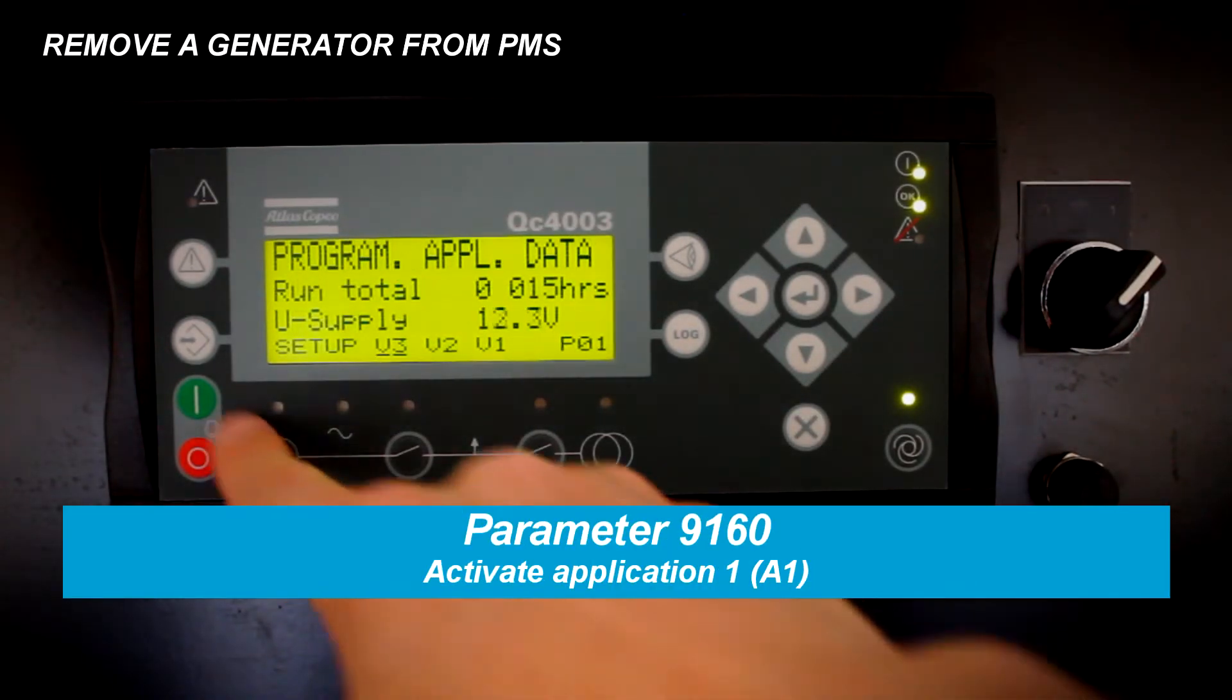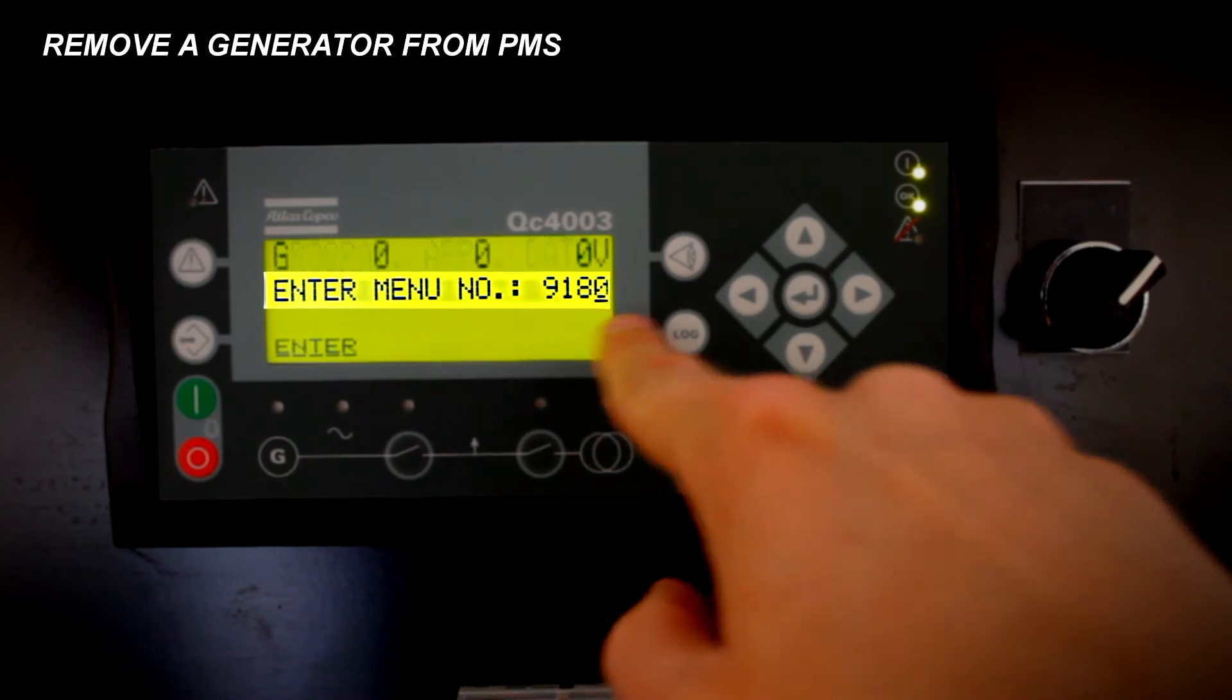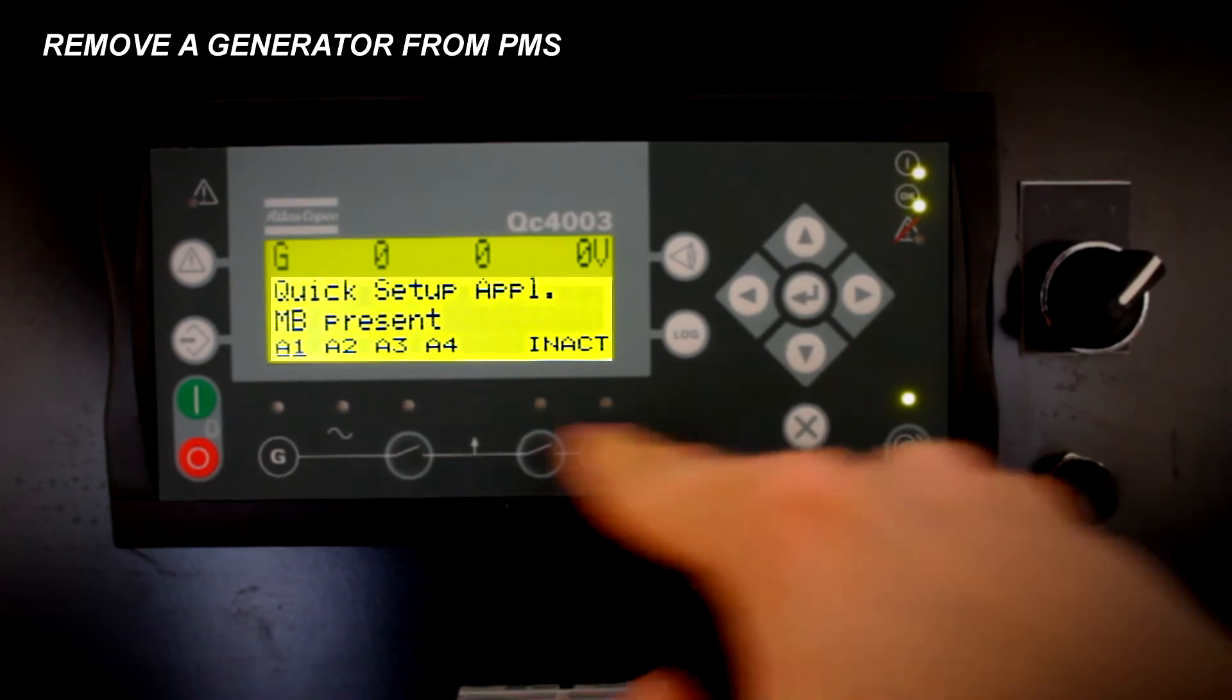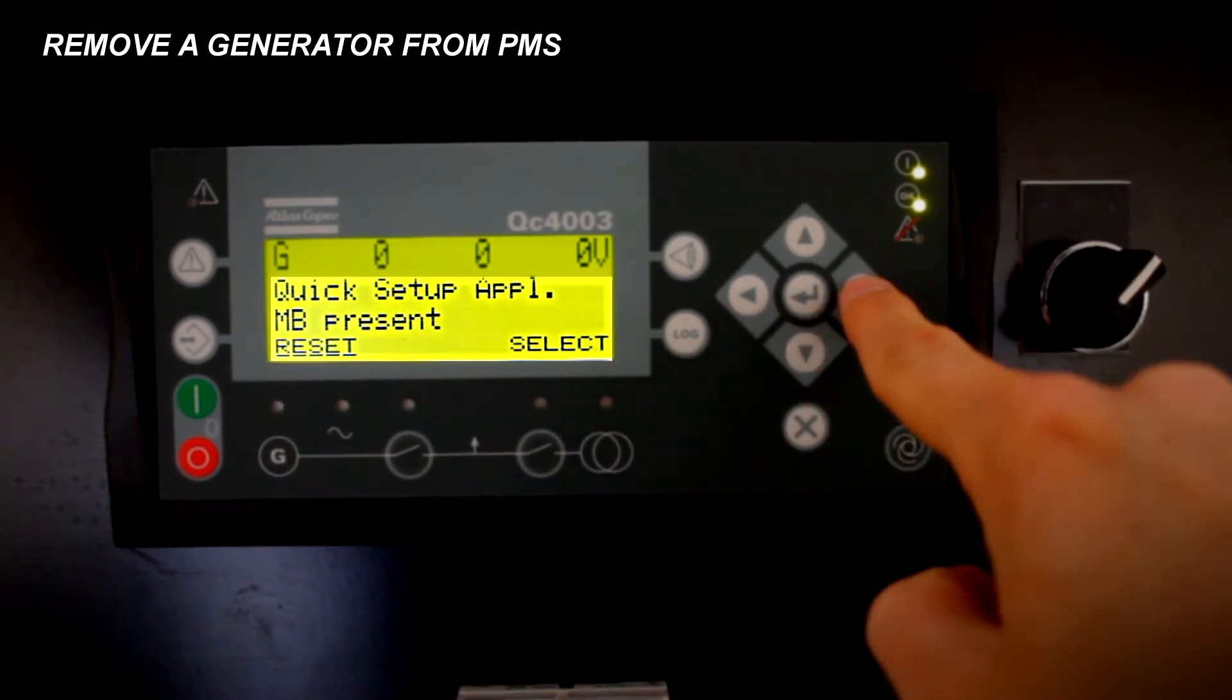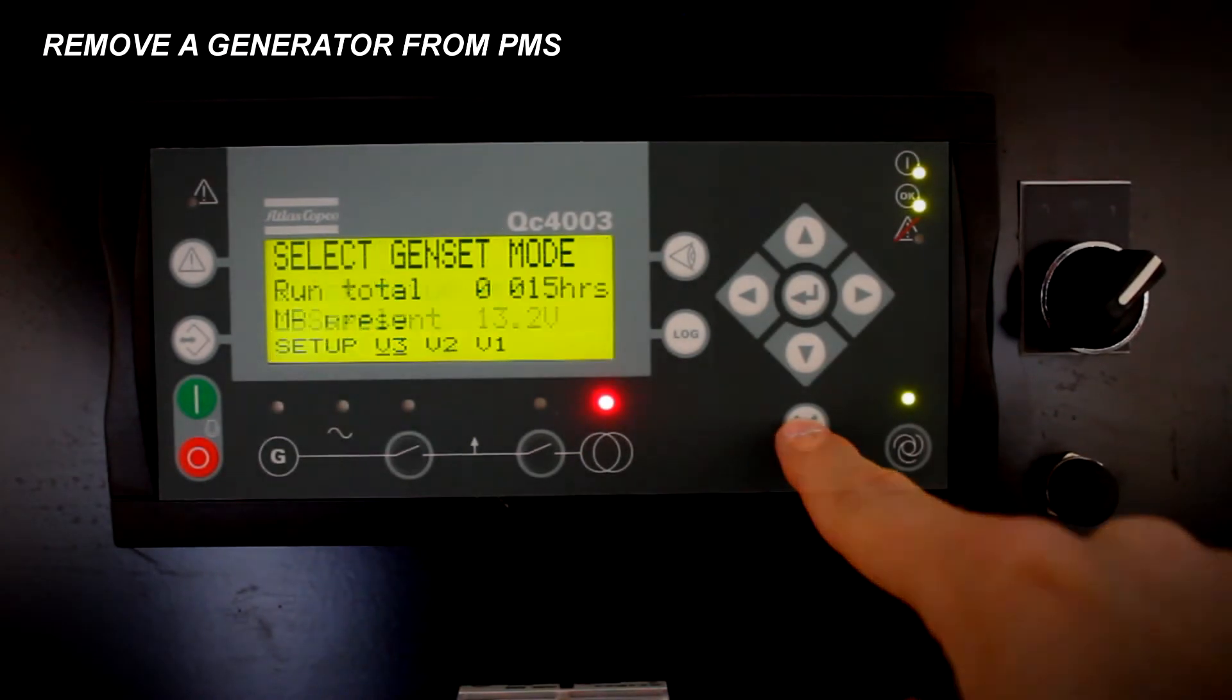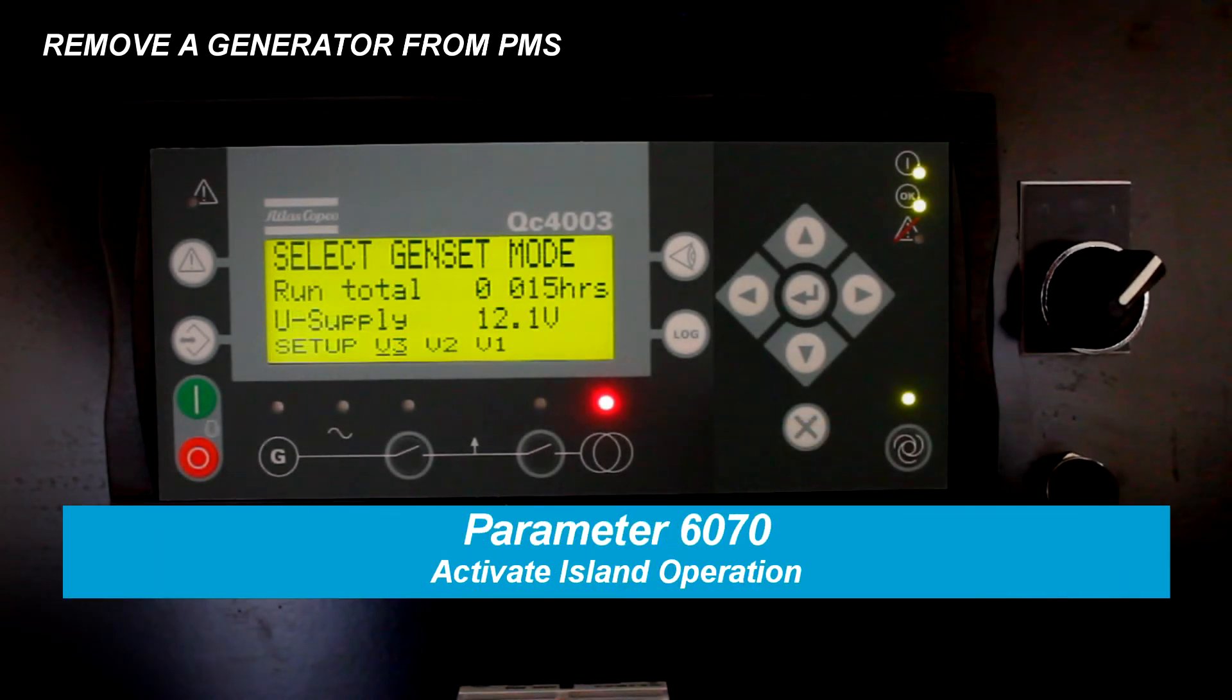Put the controller as application 1 by pressing the jump button and find parameter 9160. Activate application 1 at parameter 9160. Activate island operation at parameter 6070.